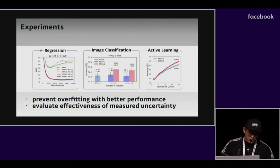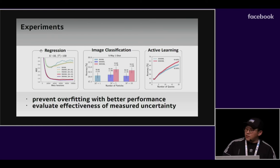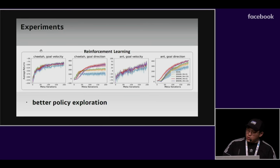In our experiments, we show that our method is able to prevent overfitting while other methods severely overfit. Also in active learning, we can see the effectiveness of the measured uncertainty. In reinforcement learning, we can see that our method shows better policy exploration as well.